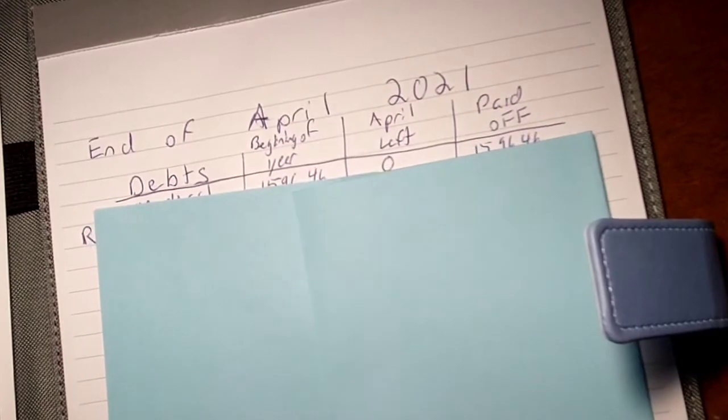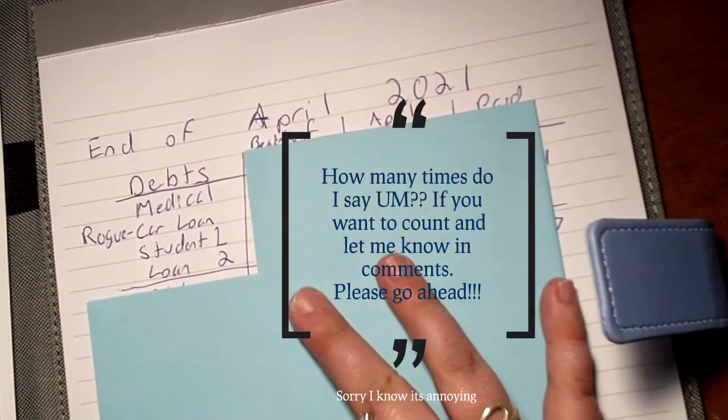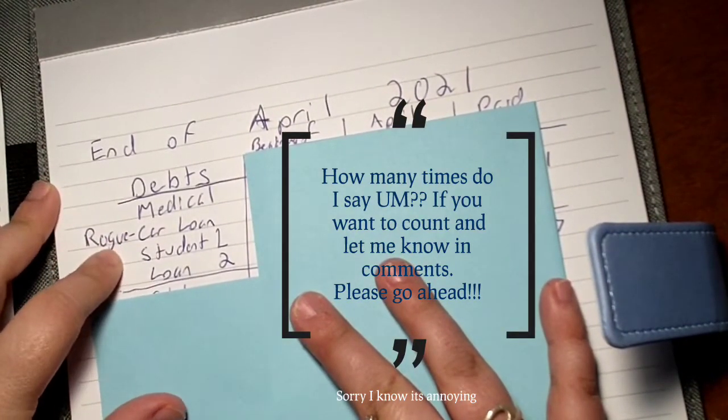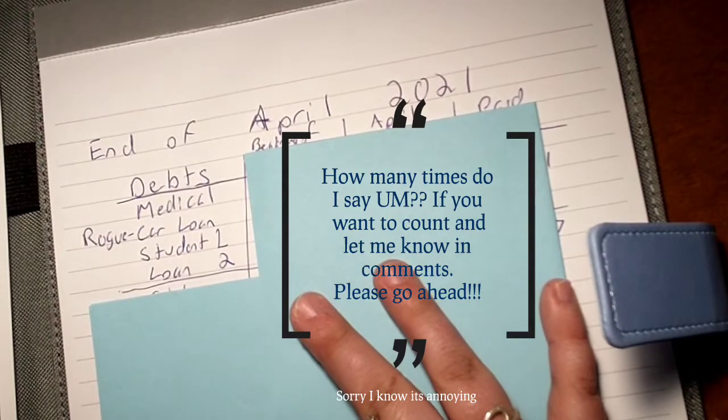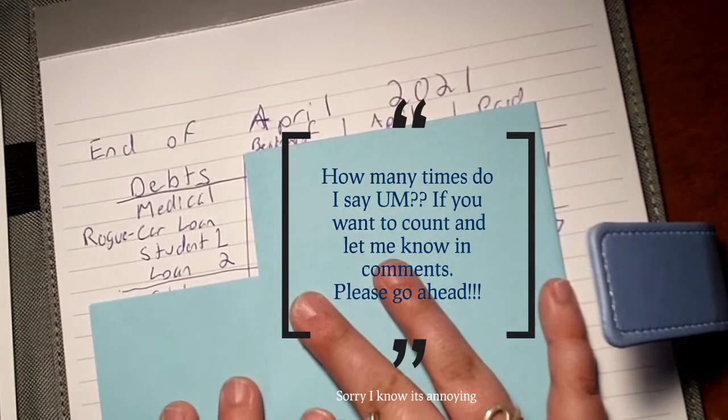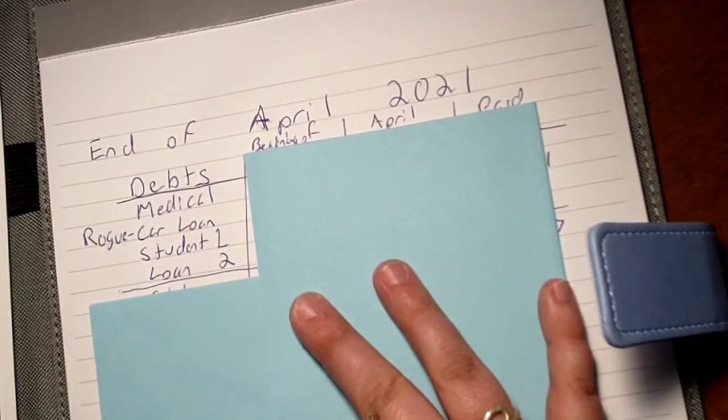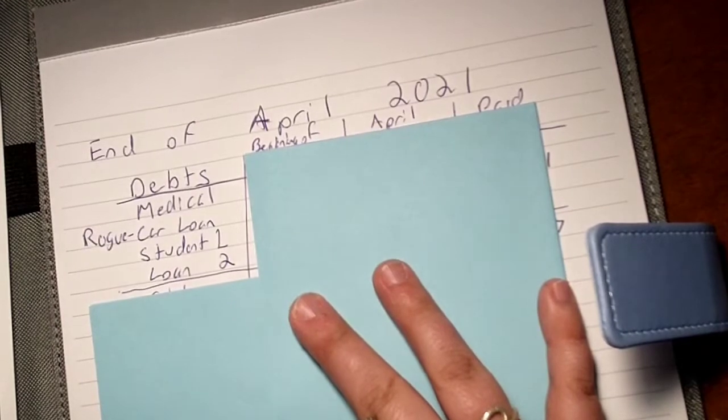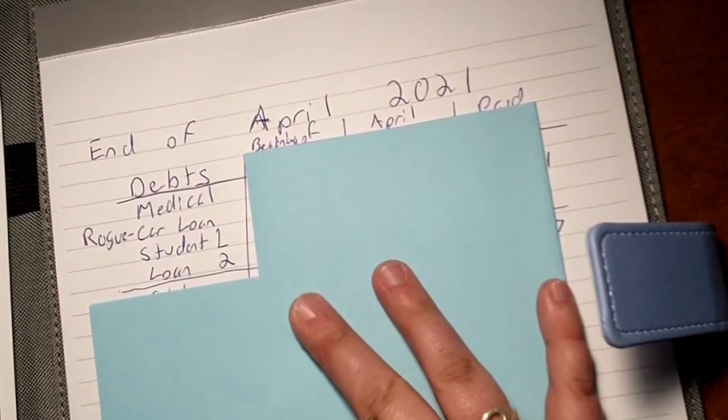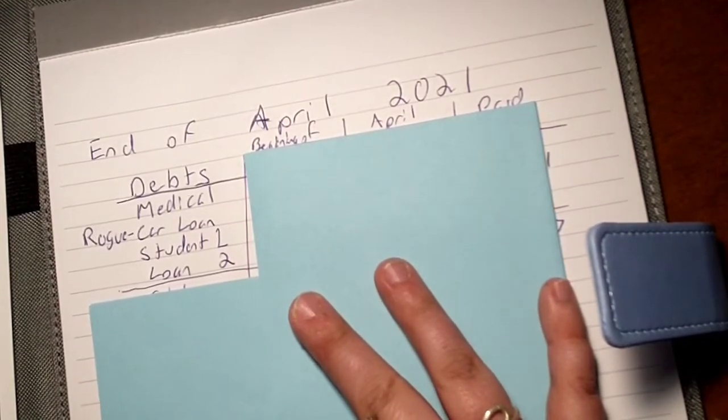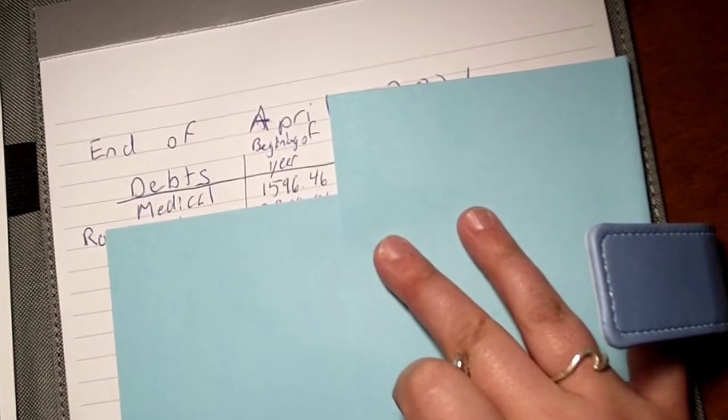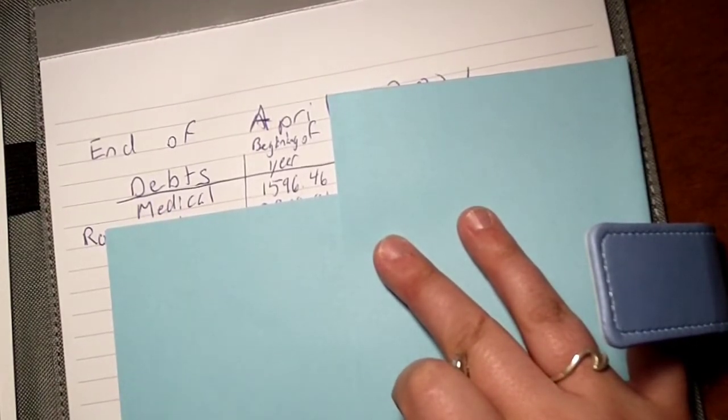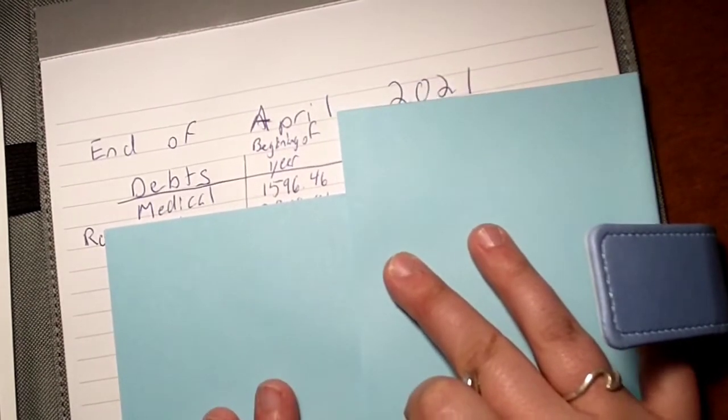So we're just gonna go with end of April, and then I'll explain what actually happened between April and now. At the beginning of the year, all the loans I had were my medical, my car loan, my student loan one, and student loan two. I had 11 student loans overall, but I'm down to two. I'll probably do a whole video on what I've paid off eventually. My medical, beginning of the year I was at just below $1,600. I paid that off sometime in February or March, so it's paid off.